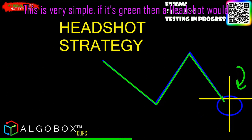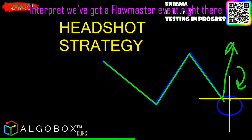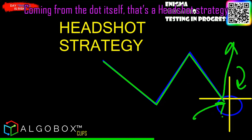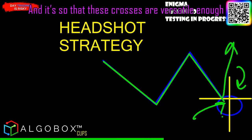So this is very simple: if it's green, then a headshot would interpret that we've got a flow master event — a white cross plus the directional bias coming from the dot itself. That's a headshot strategy, and these crosses are versatile enough to be used in other strategies.